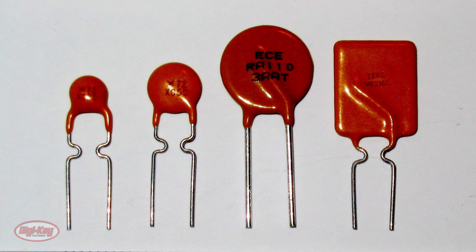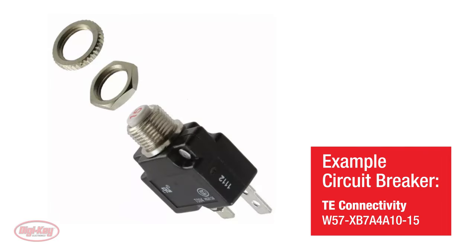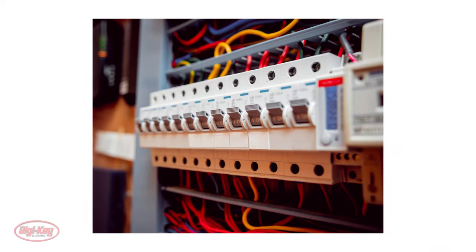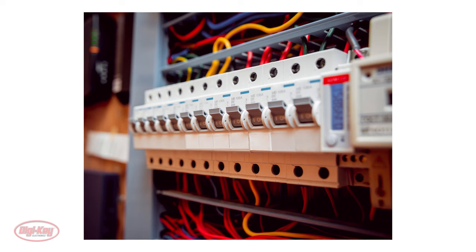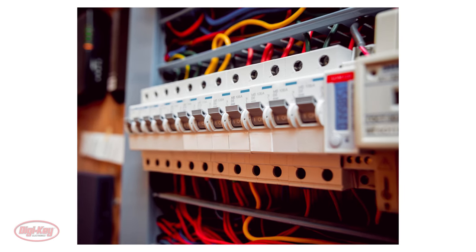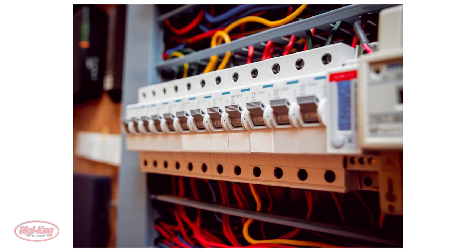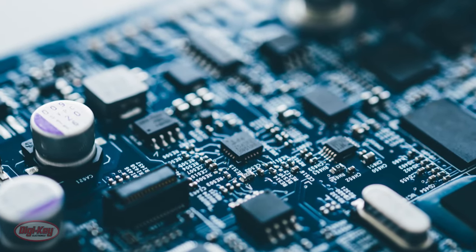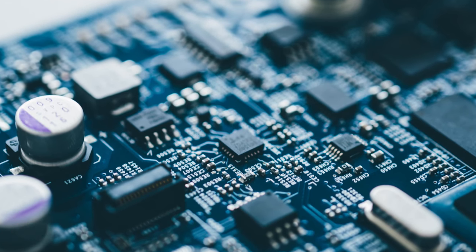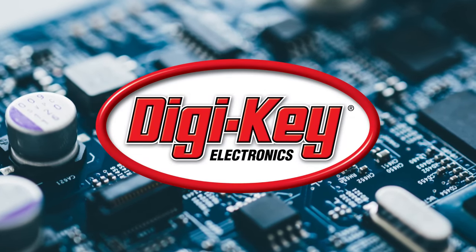The last circuit protection device that we will discuss is a circuit breaker. A circuit breaker is another device that interrupts current flow when it detects overcurrent. For example, this circuit breaker can be connected in series to a load operating at less than 250 volts AC. When a current more than 15 amps is detected, this circuit breaker will automatically break to avoid any damage, but unlike a fuse, a circuit breaker can be reset to resume normal operation. Hopefully, this video provided you with enough information to select the right circuit protection device for your next project. I hope you enjoyed this video from Digikey. Thanks for watching.